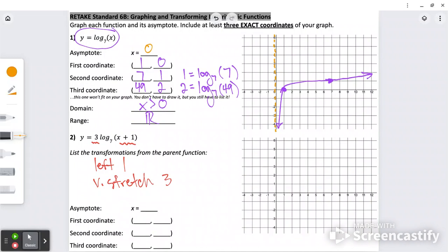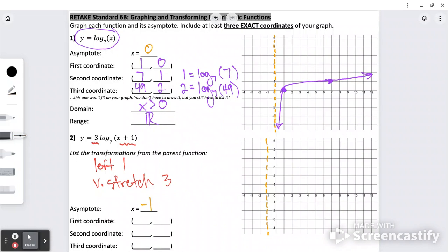So let's think about where everything moves. The asymptote was at zero. We're going to move it left one. A vertical stretch, if it's already a vertical line, stretching it vertically won't do anything, so that's still at negative one. Then the first coordinate was at (1, 0). Let's move it left one, and then stretching by three really just means multiply the y value by three.